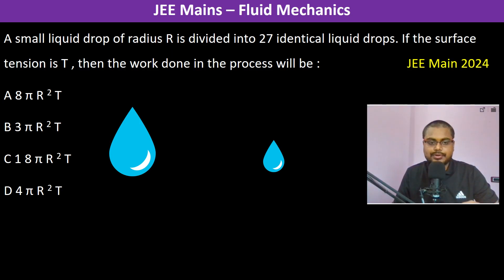A small liquid drop of radius R is divided into 27 identical small liquid drops. This is the radius of the volume of water that is only divided, so therefore the total volume should remain constant.